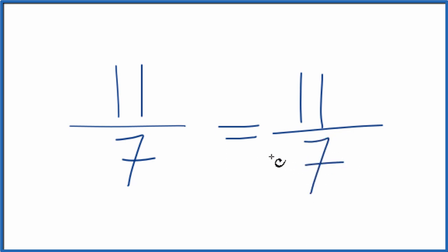That's what we started with. What that means is that the fraction 11 sevenths, it's already reduced as far as it can be reduced. So this is already simplified.